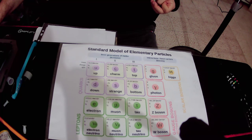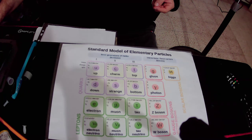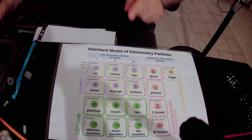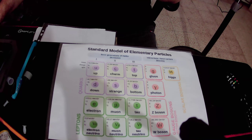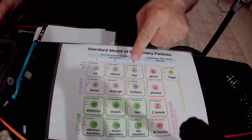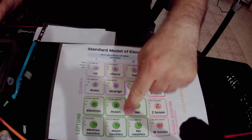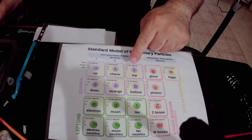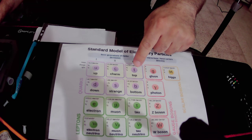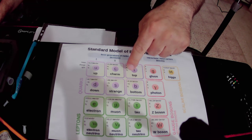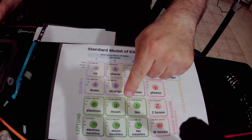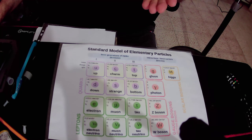The 17 elementary particles consist of 12 elementary matter particles. There are 6 types of quarks shown in purple and 6 types of leptons shown in green. In total, we have 12 elementary matter particles, which are also called fermions.